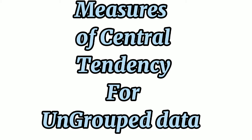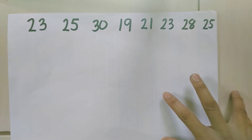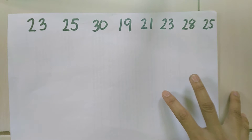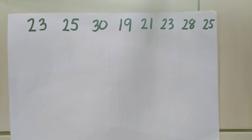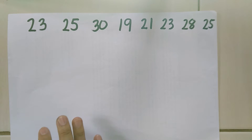Here is an example of solving the Measures of Central Tendency — the mean, median, and mode — for ungrouped data. We have here a set of data: the scores of eight students in a test.